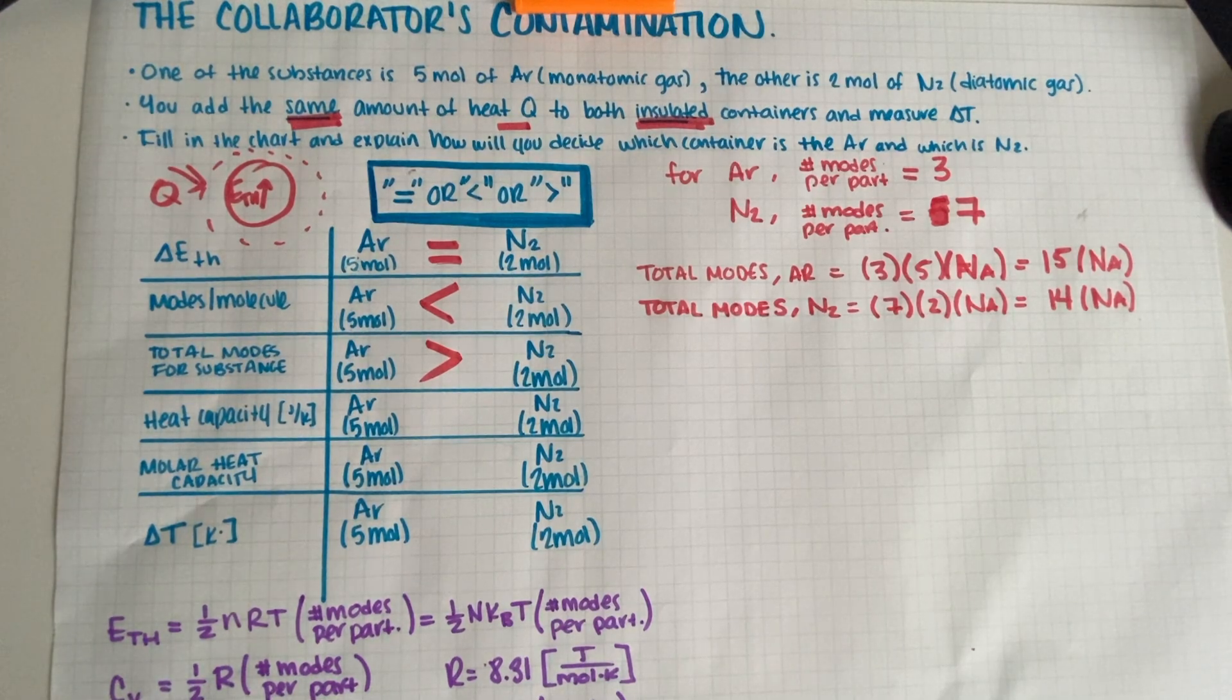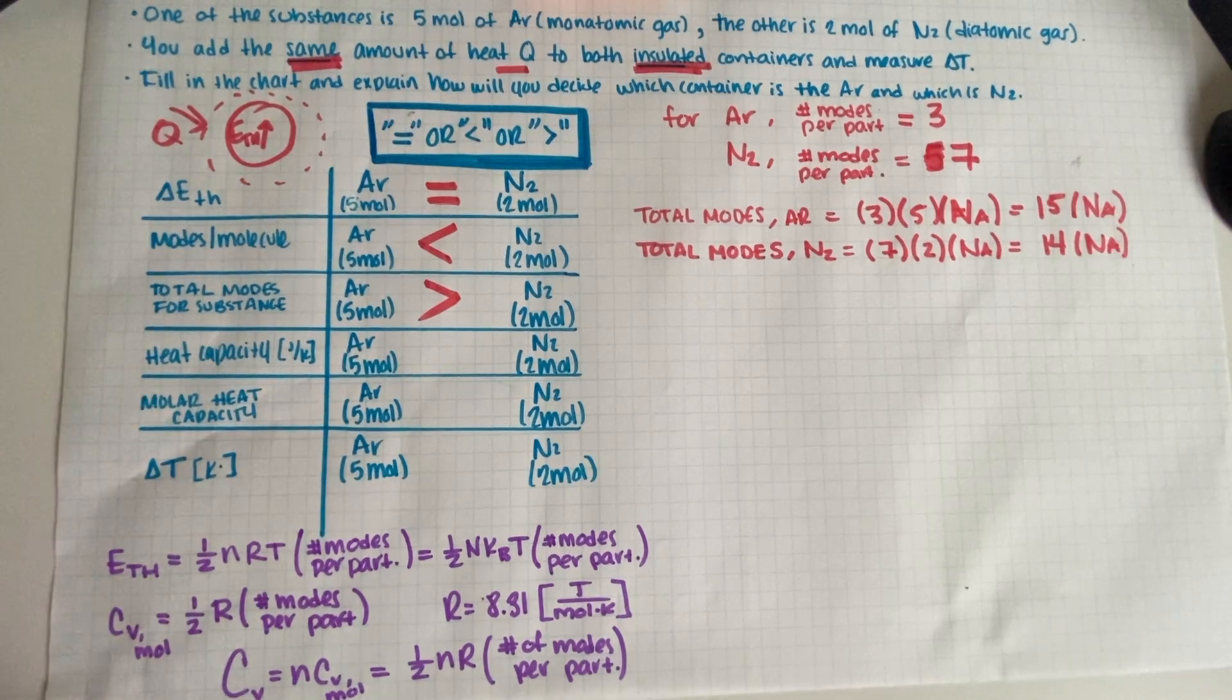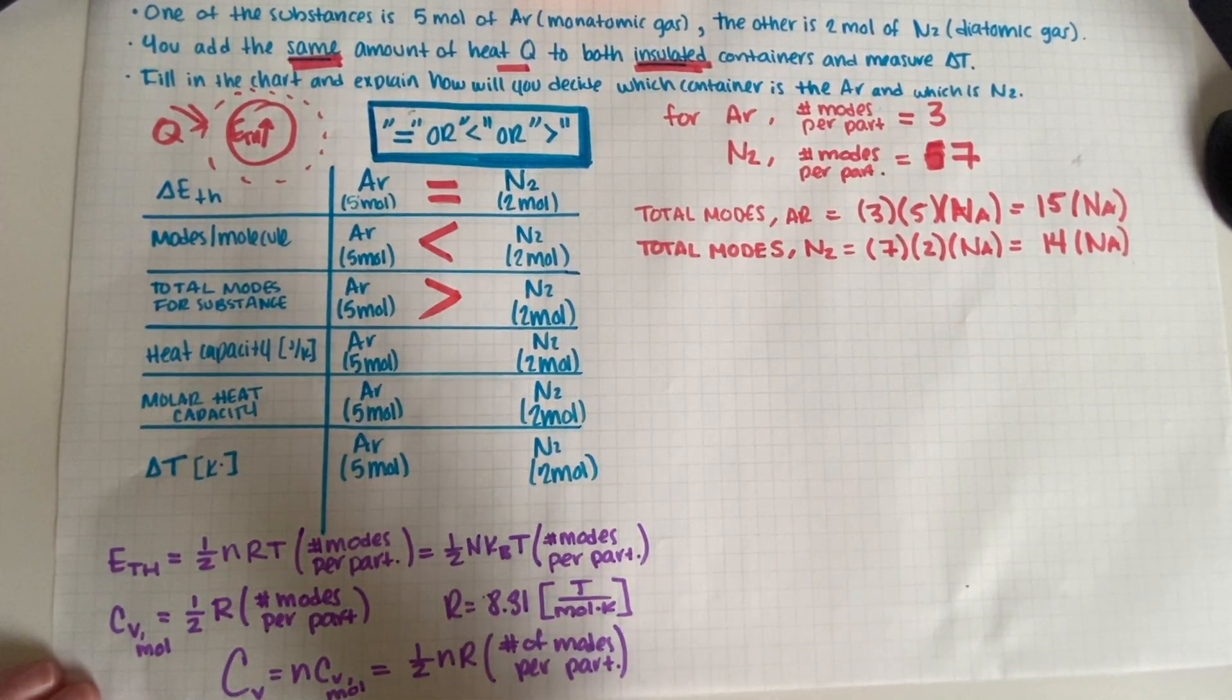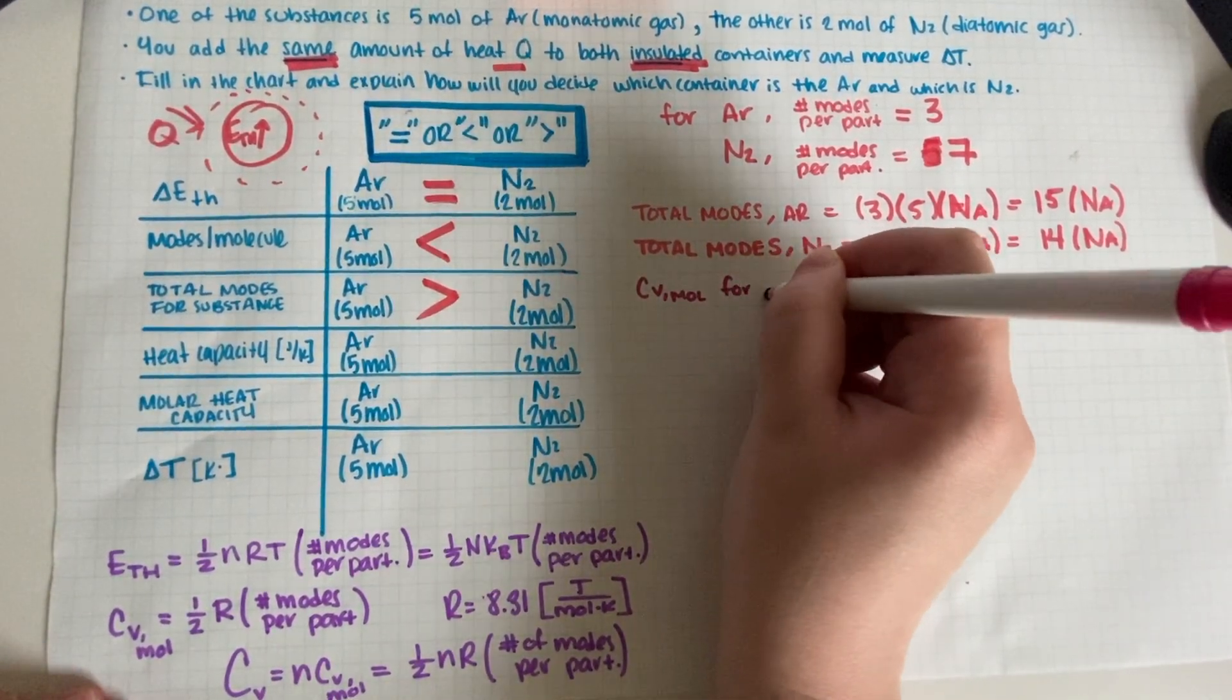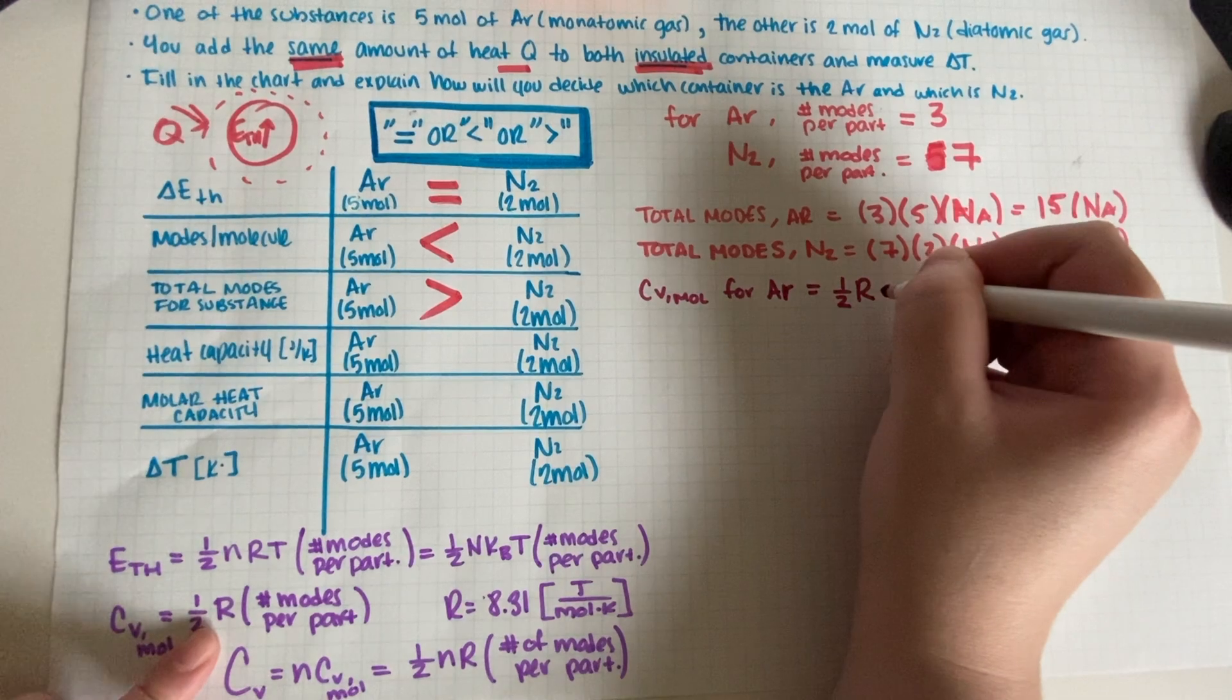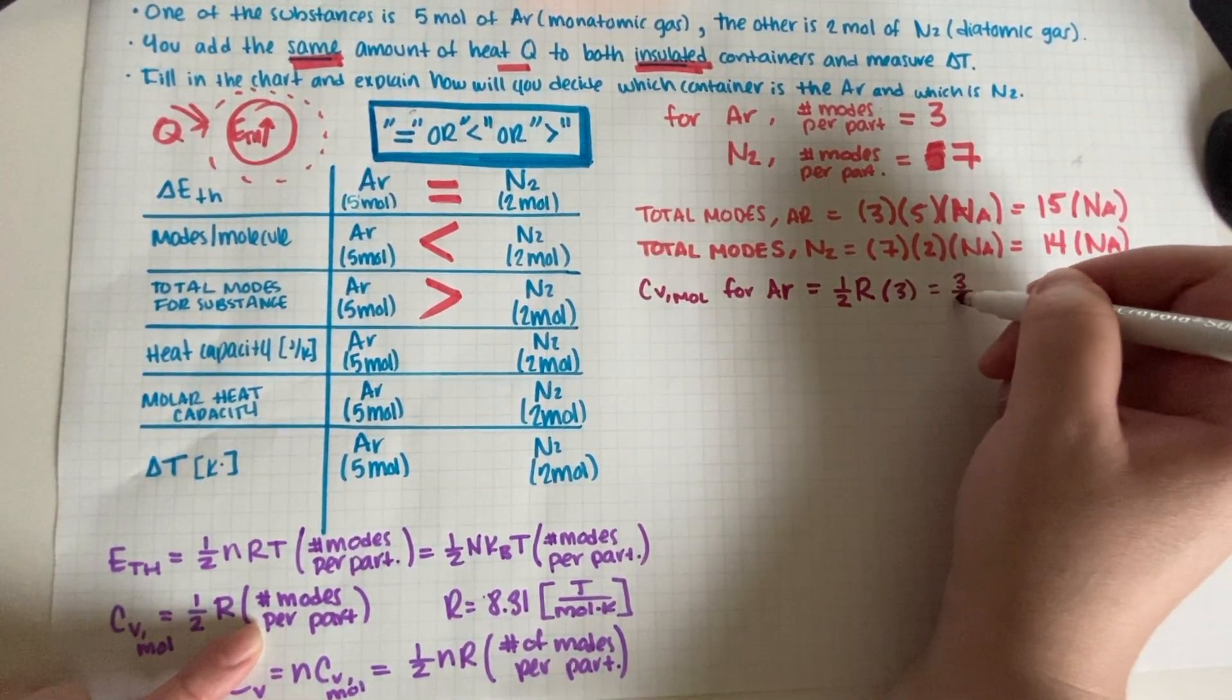Heat capacity. So for heat capacity we're actually getting into our equations. We had heat capacity which is the big C and molar heat capacity which is small c. So let's just go ahead and start with small c because if we do small c first then we just multiply times n and then we get both answers at once. So cv molar for Ar is equal to one half r modes per particle, so this is times three, so this is three halves r.